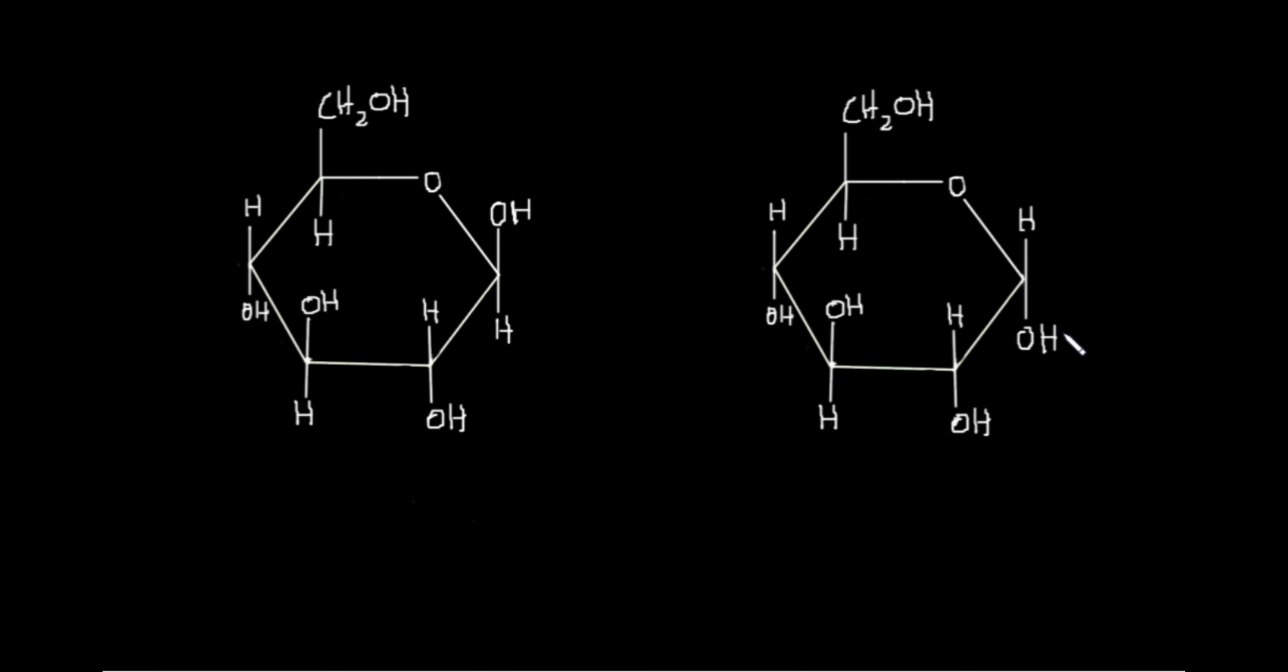The form where the OH is at the top and the H is at the bottom is known as the alpha form, alpha glucose or alpha D-glucose. The configuration where OH is at the bottom and H is at the top is known as the beta form, which is beta glucose. These two forms are interchangeable, which means in solution they can change from one form to another.